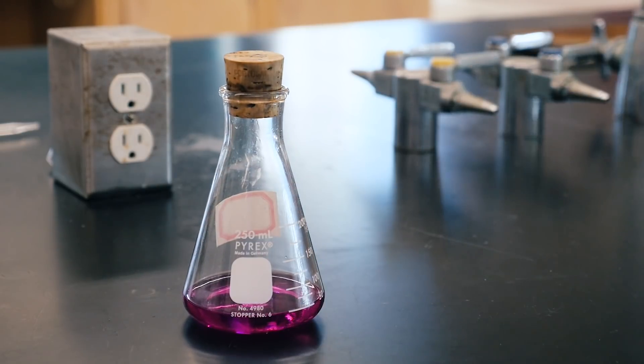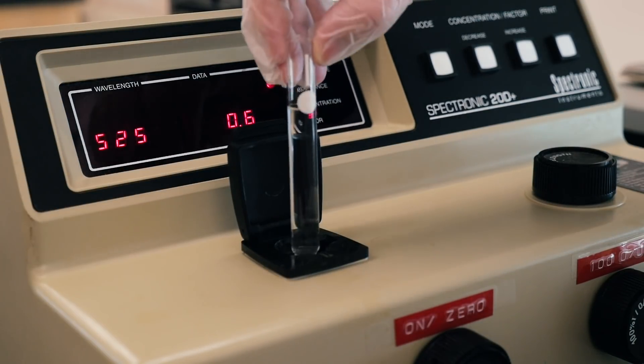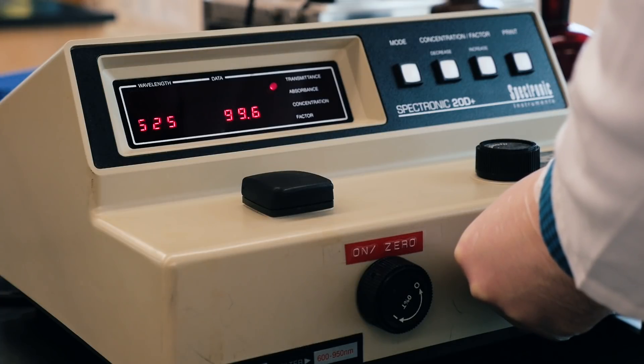With the sample compartment empty, adjust the percent transmittance to 0%. Then insert a separate cuvette filled with water and adjust the transmittance to 100%. This is to calibrate the instrument.